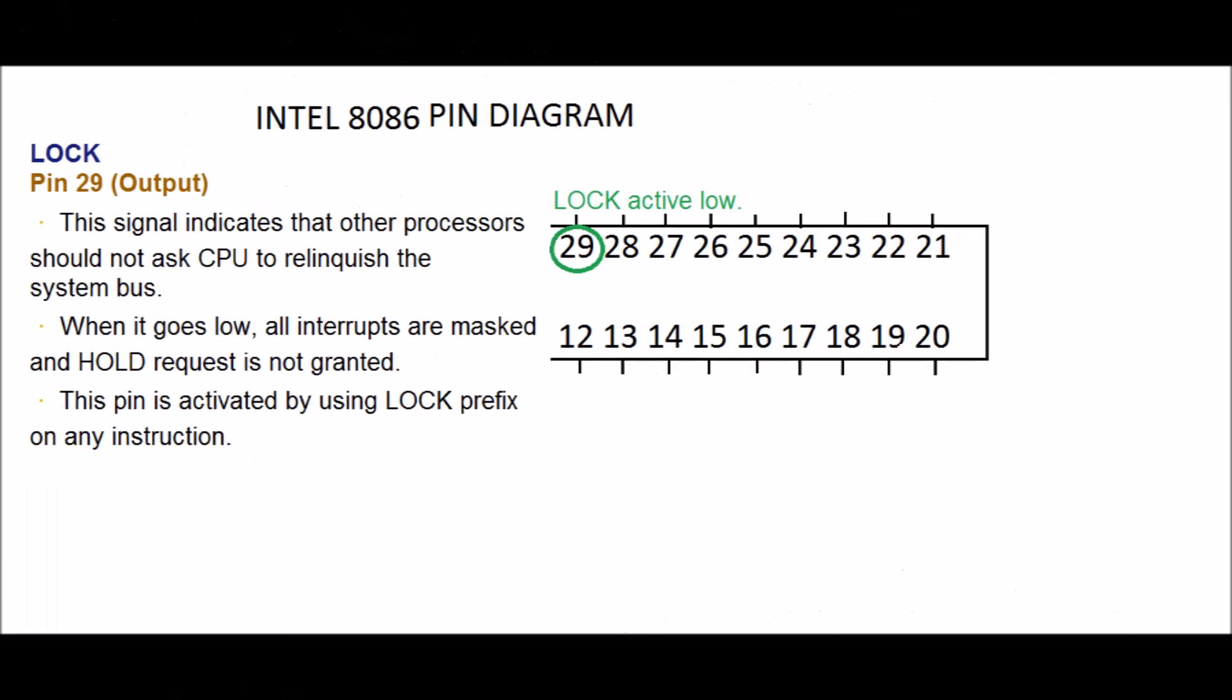Lock, PIN 29, output. This signal indicates that other processors should not ask CPU to relinquish the system bus. When it goes low, all interrupts are masked and hold request is not granted. This PIN is activated by using lock prefix on any instruction.